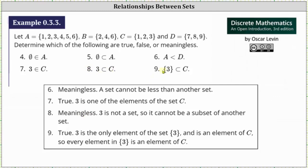Number nine, the set containing three is a proper subset of C. Set C does contain the element three and therefore the set containing three is a proper subset of C. Number nine is true. I hope you found this helpful.